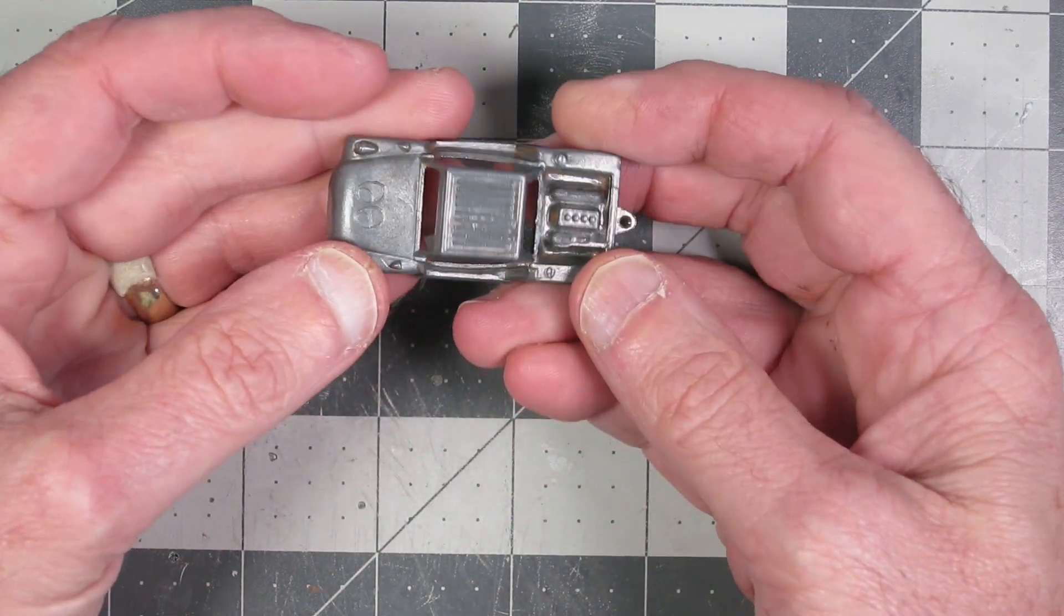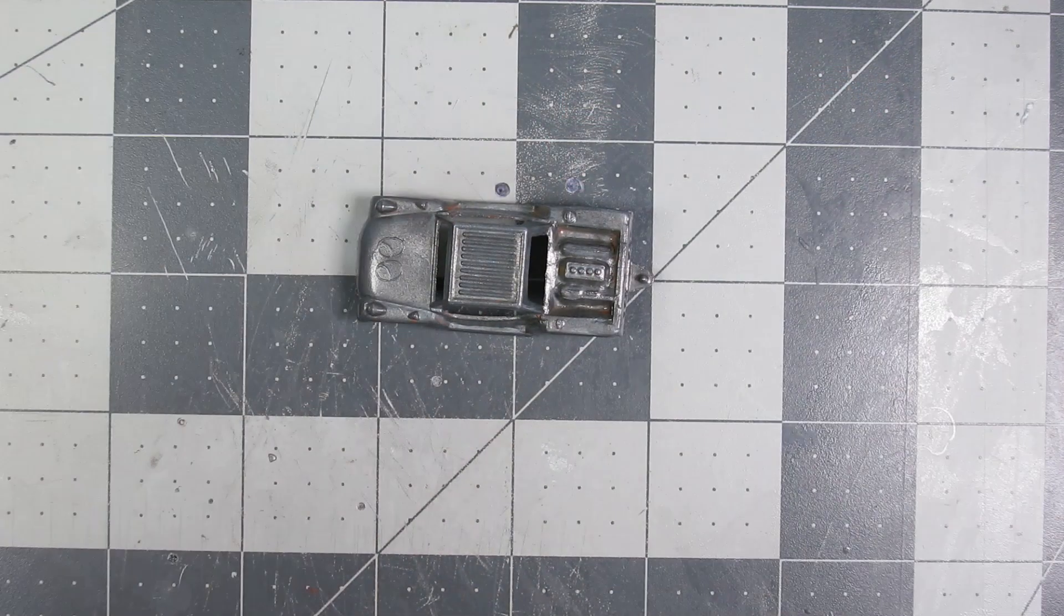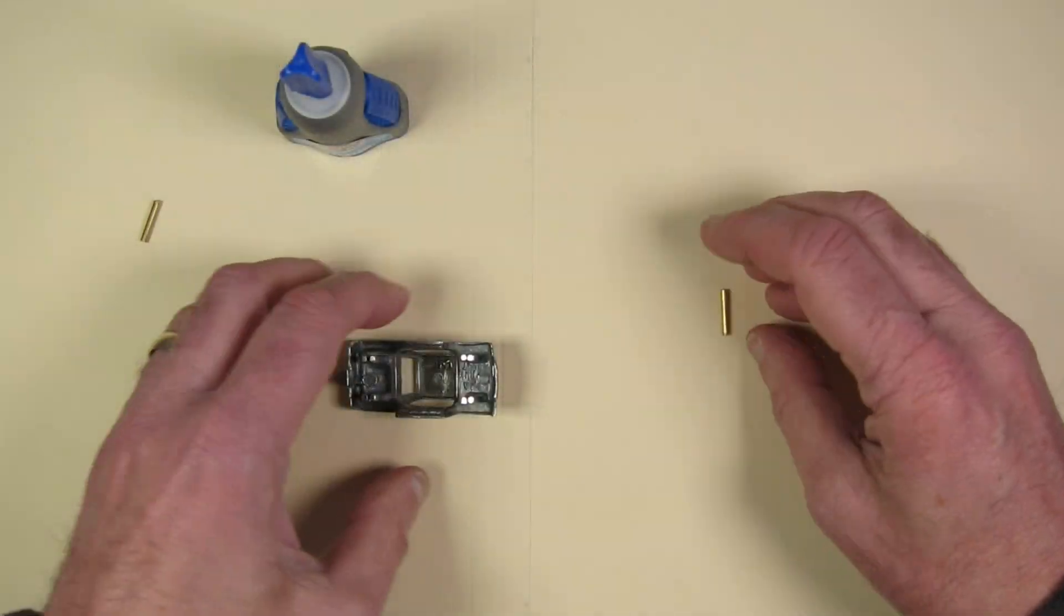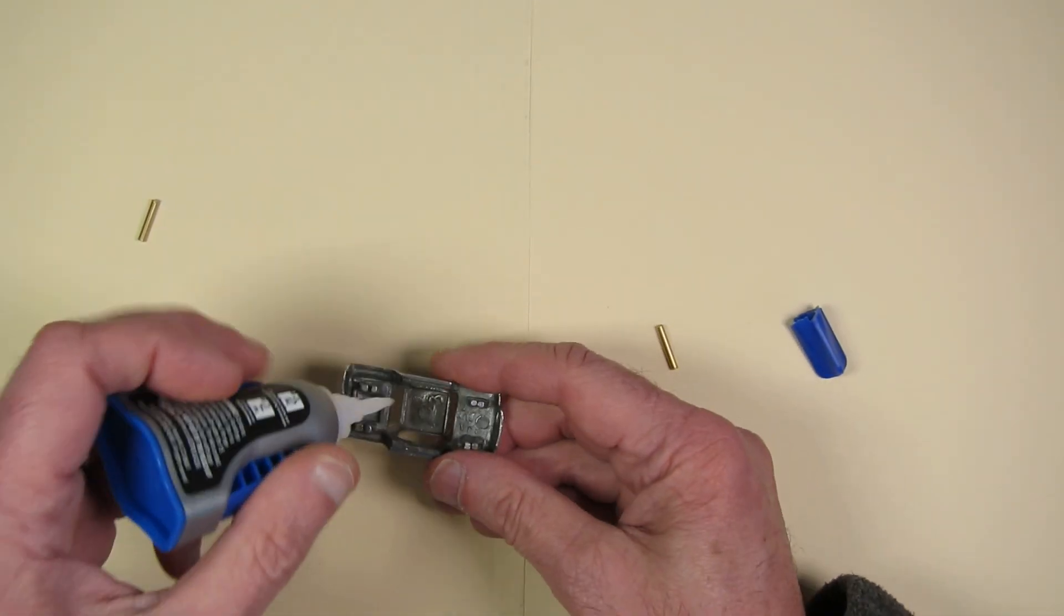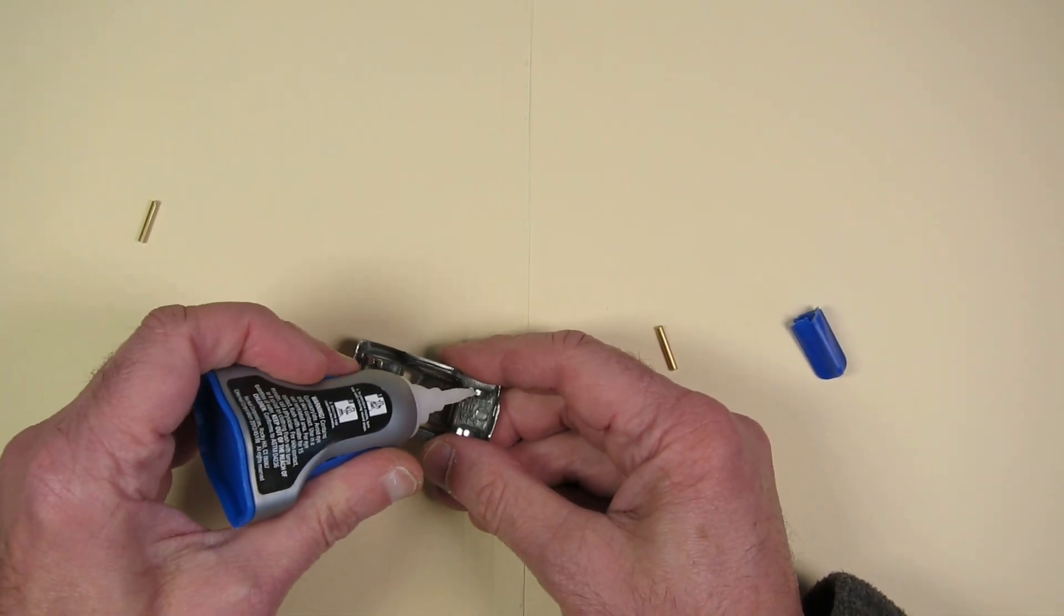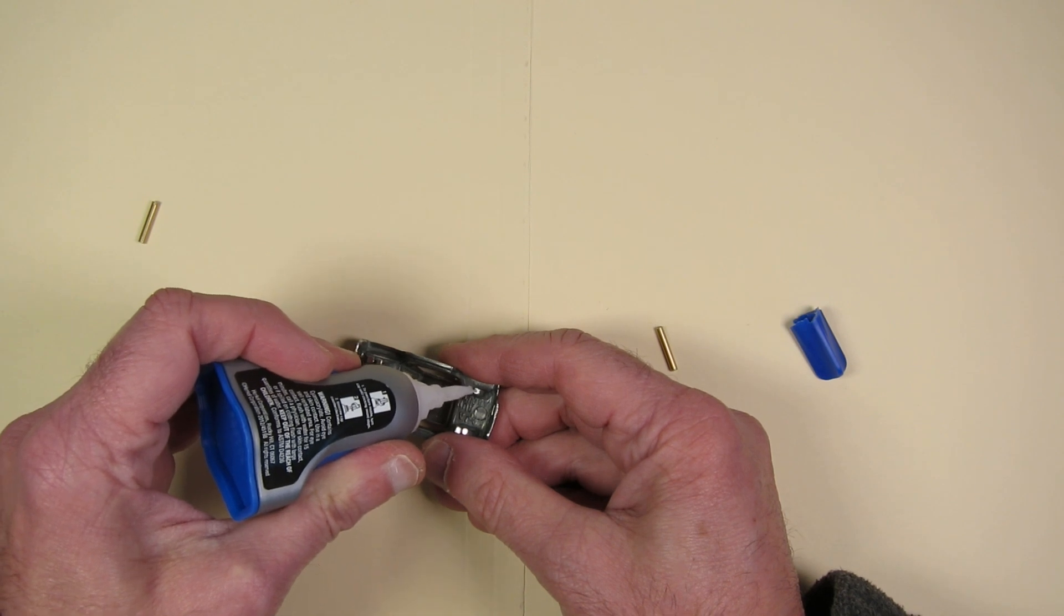I chose this one to do for this build. You see those eyes on the hood? That kind of chose the direction I was going to go with this little guy. This is a Tootsie Toys runabout from 1974.